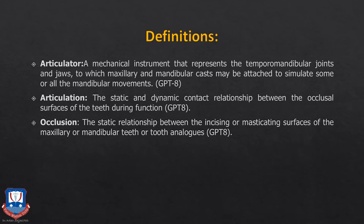Coming to the definitions: an articulator is a mechanical instrument that represents the TMJ and the jaws, to which the maxillomandibular cast may be attached to simulate some or all of the mandibular movements. Simply put, an articulator is an artificial substitute of the patient's mouth — that is, the TMJ and the jaws — outside the patient's mouth in the laboratory, so that you may be able to fabricate a prosthesis, whether it may be an RPD, a complete denture, a PFM restoration, an all-ceramic crown, or anything else.